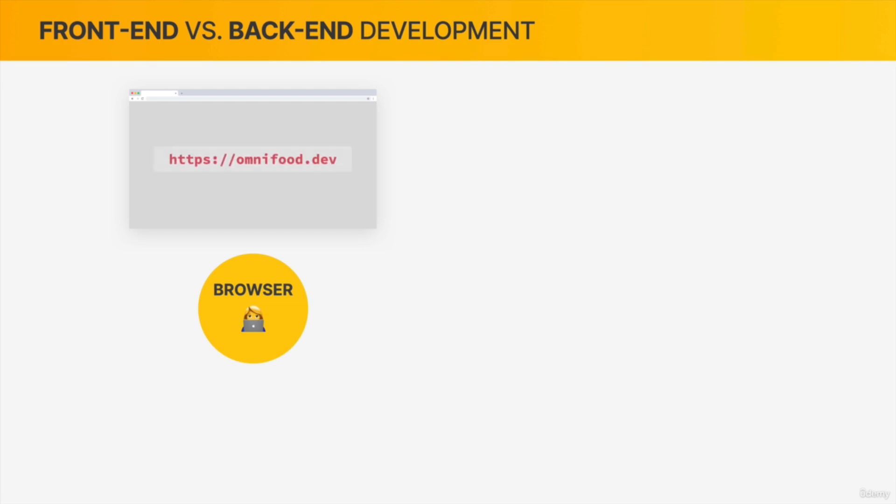Just keep in mind that this is just a high level overview, and I'm going to leave out a lot of details. This is really just so you get familiar with some concepts and terms that all web developers know before you start your own journey. Let's say we're trying to access a web page in our browser at omnifood.dev — and by the way, this is the website we're going to develop throughout this course.